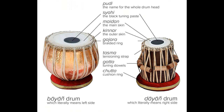Here are the different parts of the tabla and their definitions. Daya: right drum. Pudi: head — the playing surface of the dayan, made of layers of goatskin, with a central black spot known as the sayahi.